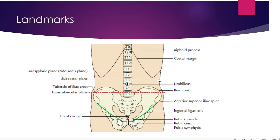In the lower part, you can see the anterior superior iliac spine, the fold of groin, the pubic tubercle, the pubic crest, and the pubic symphysis — this is the lower limit. Laterally, if you draw a mid-axillary line on either side — the line passing through the midpoint of the anterior and posterior axillary folds — the mid-axillary line is the demarcating line between the anterior and posterior abdominal wall. The xiphoid process lies at the vertebral level of T9.